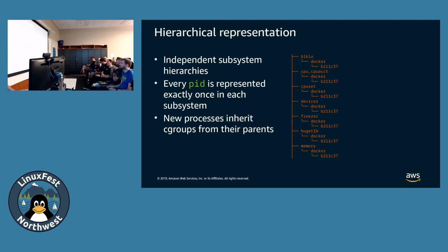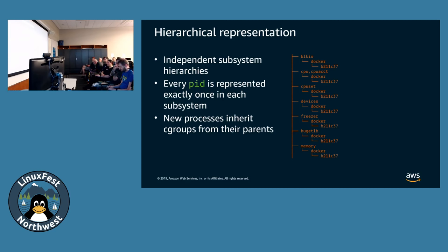Each of the subsystems has an independent hierarchy — they're all hierarchical representations of processes but independent of each other. Each task or process ID running on the system is organized into one of the locations in each subsystem. Independent hierarchies allow for more expressive segmentation across resource types — for example, having two processes that share the same total pool of memory but allocate different amounts of CPU to each. Some resource controllers use that hierarchical representation to have inheritance rules around how resources are controlled, such as the memory controller where you can limit the total amount of memory at a higher level of the hierarchy.